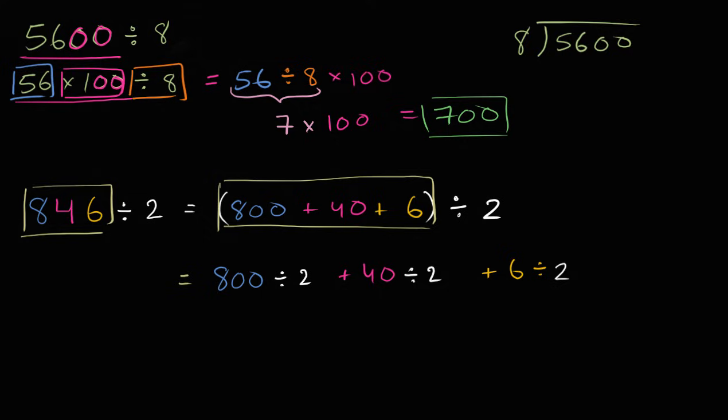So, once again, you have 800 divided by 2, that's that right over there, plus 40 divided by 2, plus 6 divided by 2. So, we distributed the division by 2. Well, 800 divided by 2, you should do it in your head. This is 800s, divide that by 2, you're going to get 400s. 4 tens divided by 2 is going to be 2 tens, or 20. And then 6 divided by 2 is 3. So, you are left with 400 plus 20 plus 3, which of course is equal to 423.